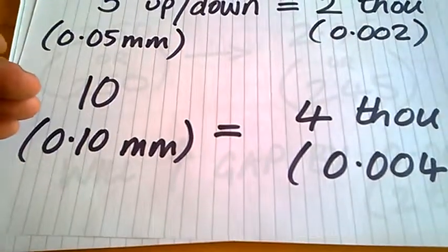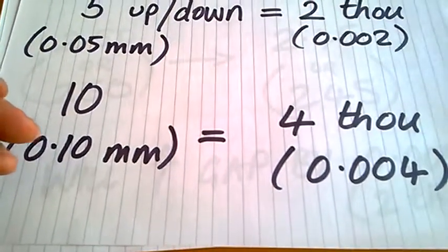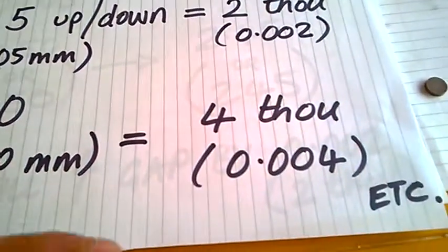And of course, then if you're up or down by 10, which is 0.1 of a millimeter, that's like 4 thousandths.